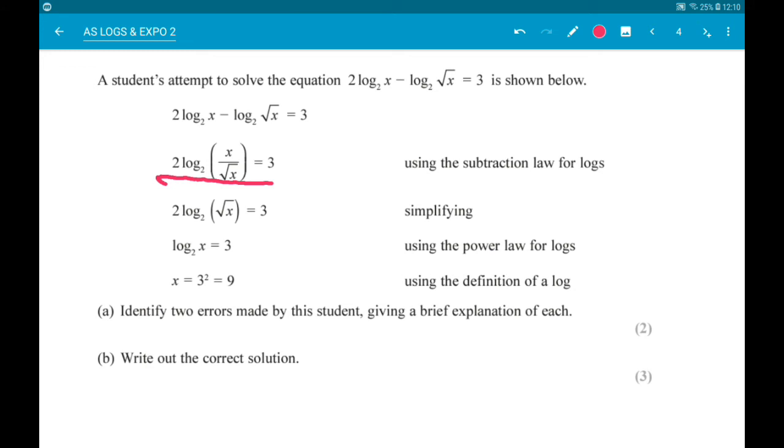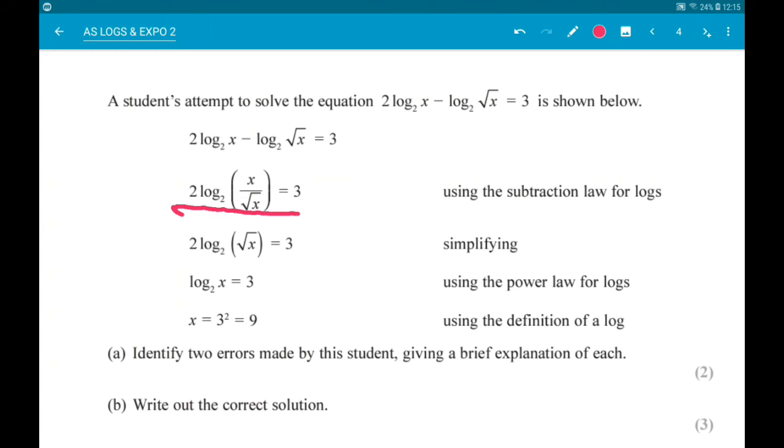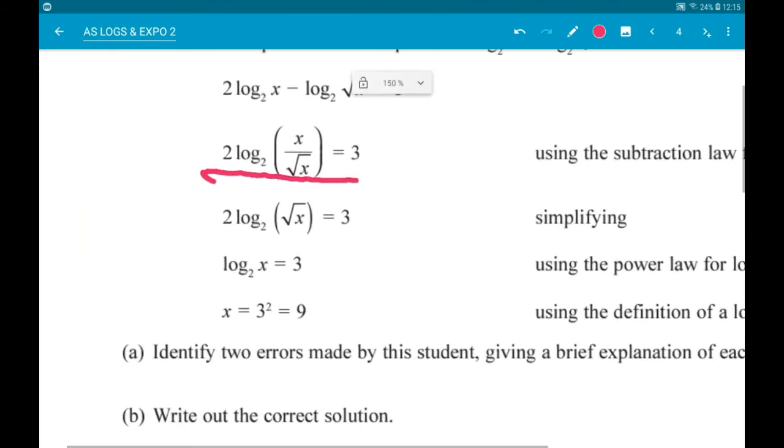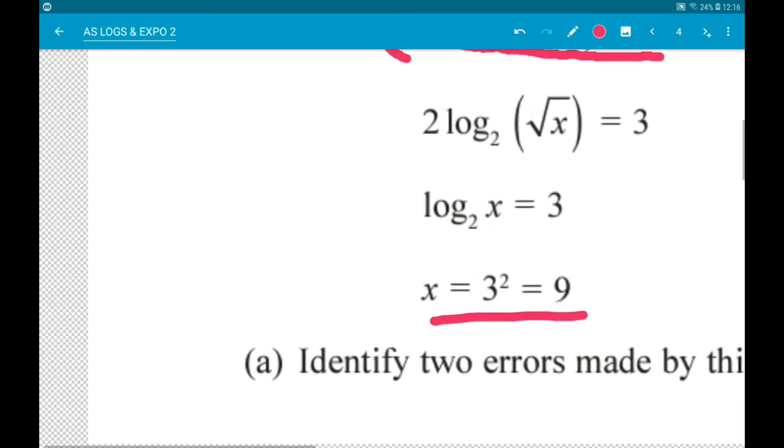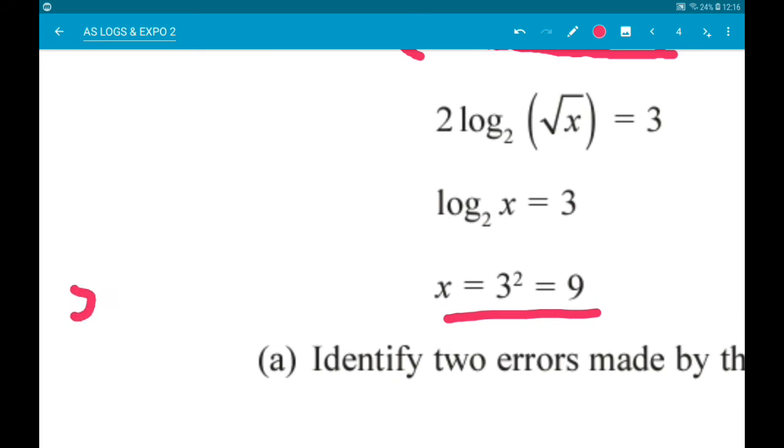Okay, then the second error is in the last two lines. So they have gone from log base 2 of x is 3 to x equals 3 squared, which is wrong. The number on the right is the power. So they should have got x is 2 to the power 3, which is 8.